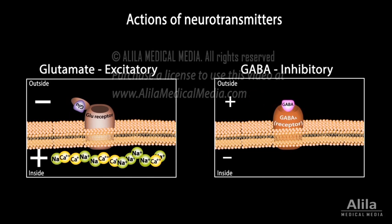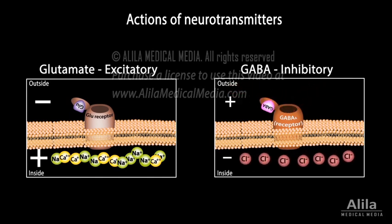On the other hand, GABA, a major inhibitory neurotransmitter, opens ligand-gated chloride channels to allow negatively charged chloride to enter, making the cell more negative, more polarized, and thus less likely to generate action potentials.